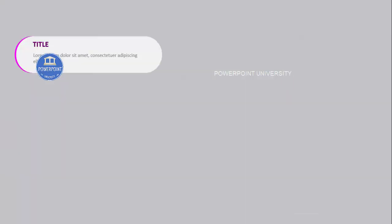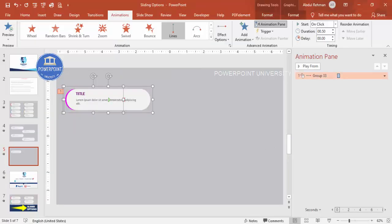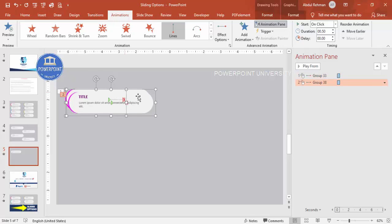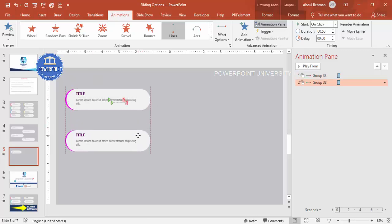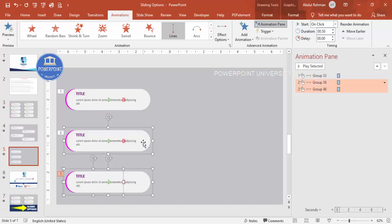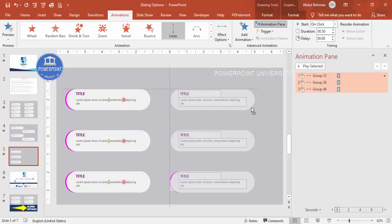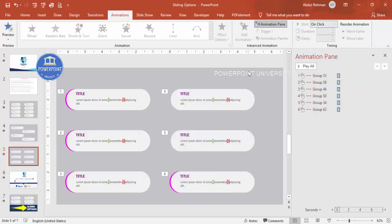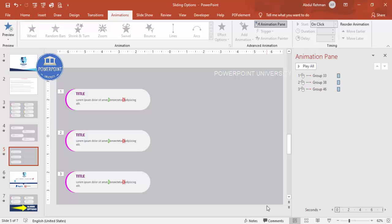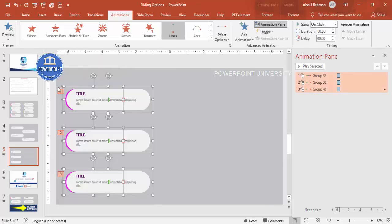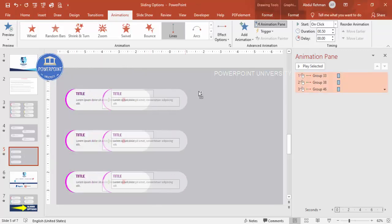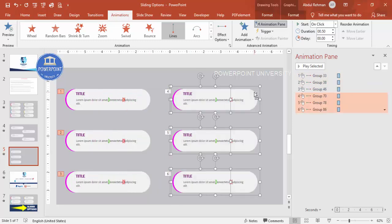Playing the animation, it slides in nicely. Now select the card and press Ctrl+D to duplicate it. For six options, duplicate multiple times. Select three cards, hold Ctrl+Shift, and drag to add three more to the right. If the selection wasn't correct, delete and redo — select all and hold Ctrl+Shift to place them properly.